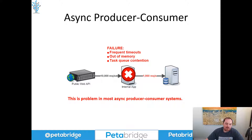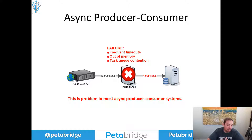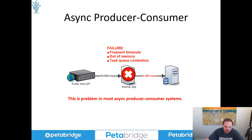This is a problem that affects the vast majority of asynchronous producer-consumer systems. When traffic is low — say, below 1,000 requests per second — this problem doesn't really need to be addressed. But once the producer starts producing traffic, even in small bursts beyond what the consumers can handle, you're going to begin having backpressure problems inside your application. That's exactly what the user in our Stack Overflow question was running into. So let's look at the source code and understand where the backpressure is coming from.